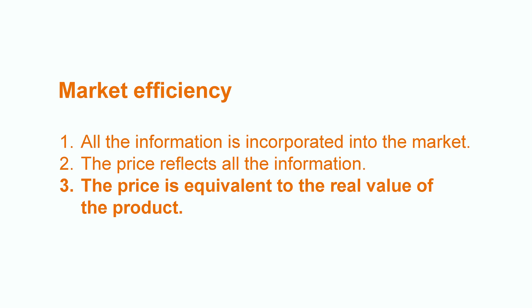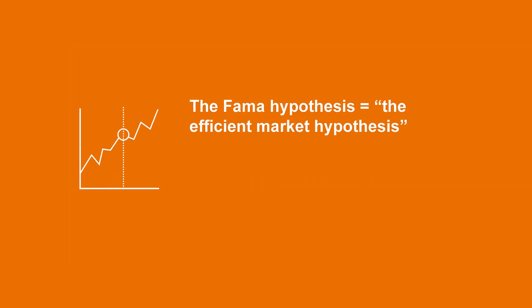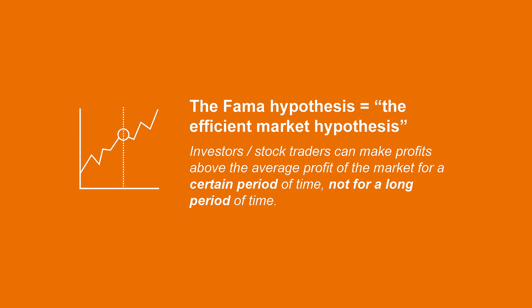It is a fair price. The Fama hypothesis, first formulated in 1970, states that no investor can consistently beat the market. This hypothesis was formulated in the context of stock markets. Stock markets are highly regulated and efficient markets. Fama postulated that investors or stock traders can only make profits above the average profit of the market for a limited amount of time. They cannot do so for a long period of time.